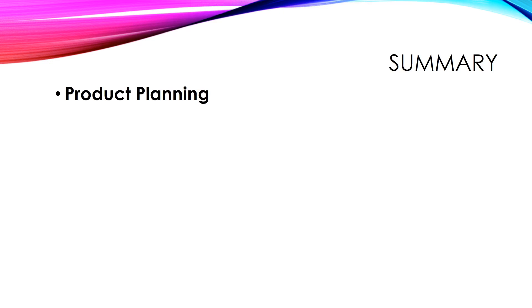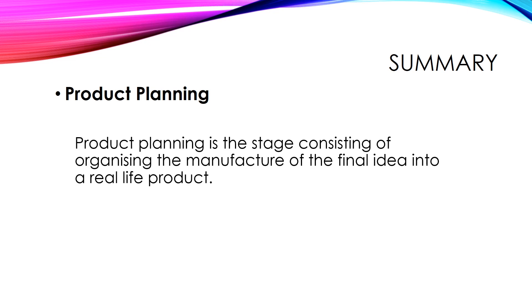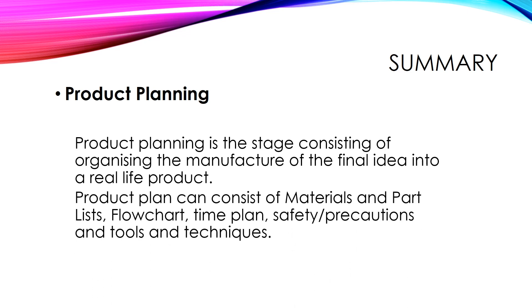Today we have learnt about product planning, which is the stage consisting of organizing the manufacture of the final idea into a real-life product. Product planning can also consist of materials and part lists, flowchart, time plan, safety precautions, and tools and equipment.